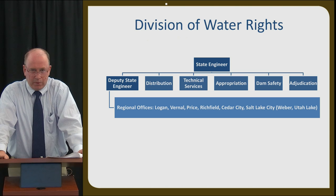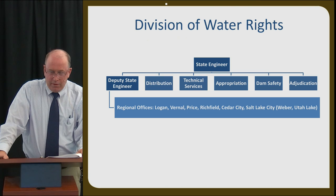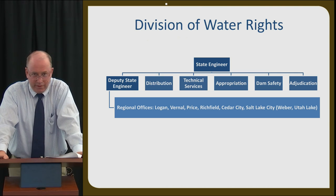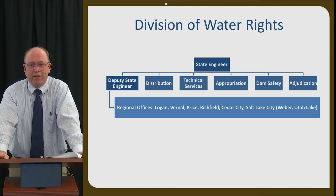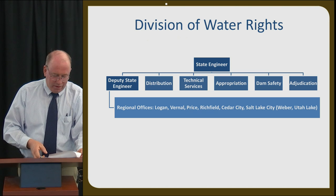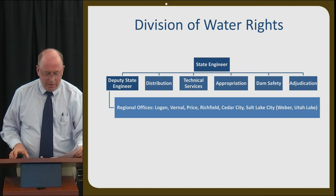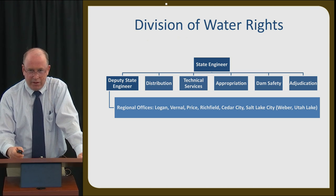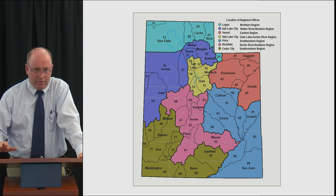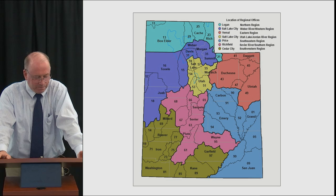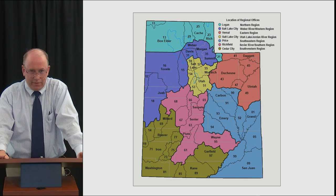The organization chart covers distribution, technical services, appropriation, dam safety, and adjudication, with regional offices scattered throughout the state. One key point is that even with this organization chart, it should be clearly understood that the Division doesn't make water, and actions on water rights do not make more water. Water rights only establish who gets to use the available water. The regional offices are in Logan, Vernal, Price, Richfield, Cedar City, and two here in Salt Lake over the Weber and the Utah Lake areas. This map shows how those regions are divided, generally along drainage basins; out west, it's more county and geography. There are seven regional offices total.